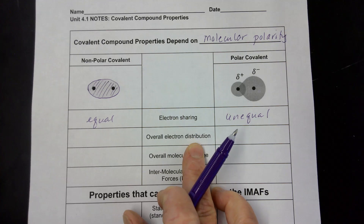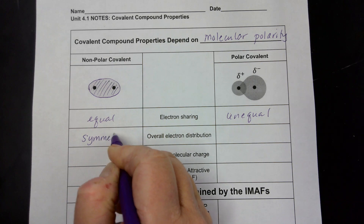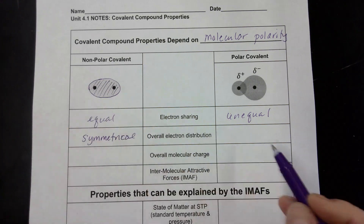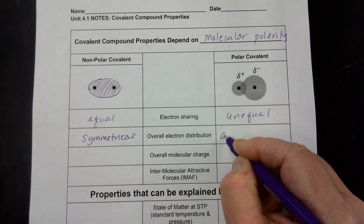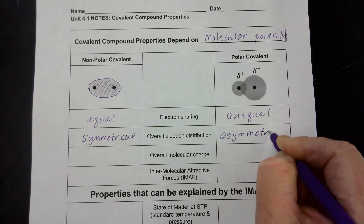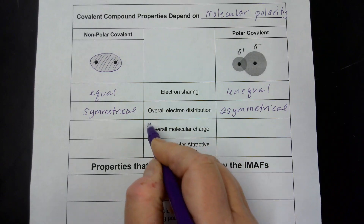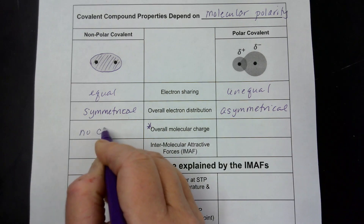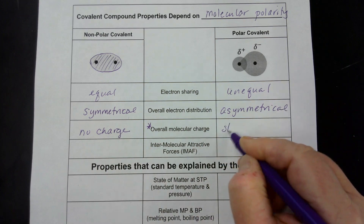The overall electron distribution is symmetrical — there's an even distribution of electrons around the molecule in a nonpolar covalent. In a polar covalent, it is an asymmetrical distribution of electrons around the molecule. The overall molecular charge is very important to understanding today's lesson: a nonpolar covalent will have no charge associated with it, but a polar covalent will be slightly charged.